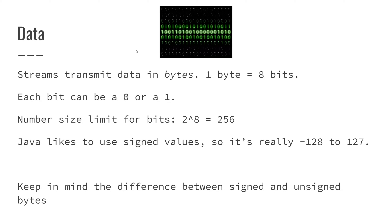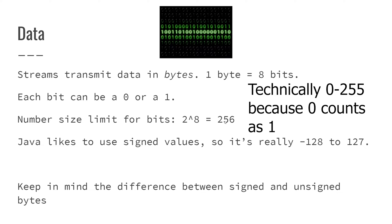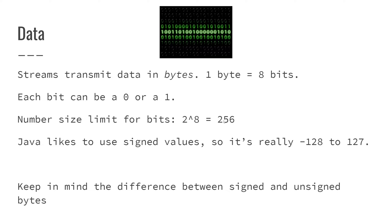The number size limit for a byte — we can find that by doing two to the power of however many bits there are. One byte equals eight bits. So if we do two to the power of eight, we get 256, which means the biggest number that you can fit within one byte is 256. So zero through 255 is the number range for one byte. If we were going to do two bytes, that would be 16 bits, so we'd do two to the 16th power, which is about 65,000. You could fit the number zero through about 65,000.